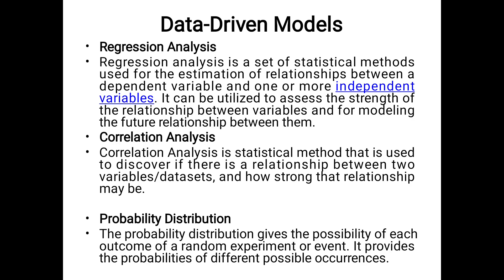Next is correlation analysis. It is a statistical method used to discover if there is a relationship between two variables or data sets and how strong that relationship may be. Next is probability distribution. The probability distribution gives the possibility of each outcome of a random experiment or event. It provides the probabilities of different possible occurrences.